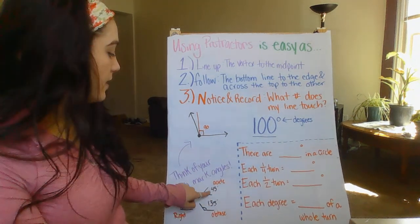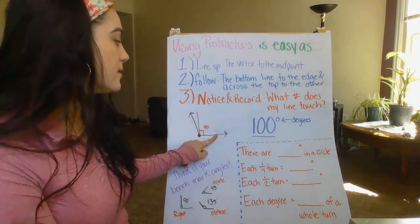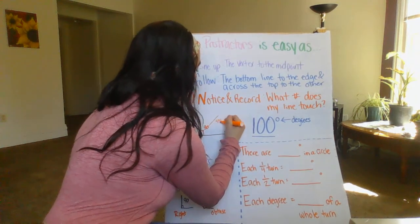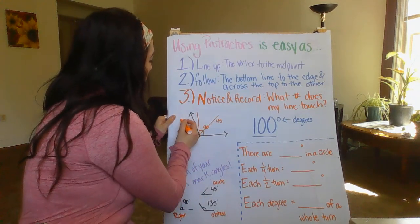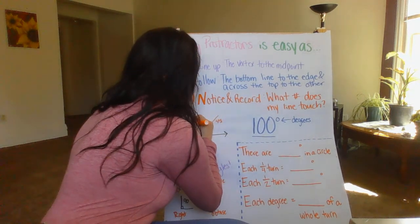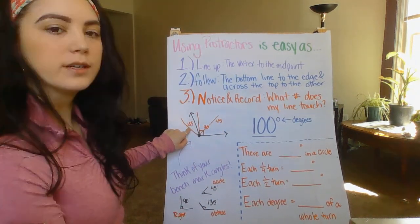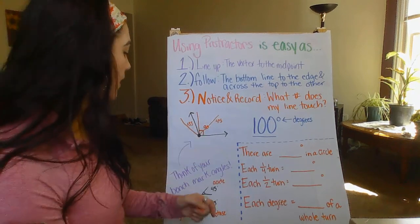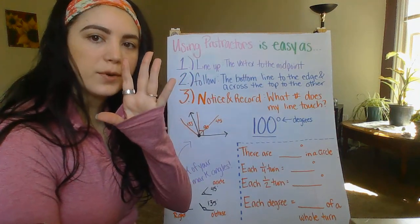Other benchmark angles include a 45 degree angle, which is dead in the middle of 90 degrees and 0 degrees — straight between them is 45 degrees. Taking it further, if you go out the other direction, that one would be 135 degrees. So we know this angle would have to be somewhere in between 90 and 135, but closer to 90 because it's closer to the right angle line.